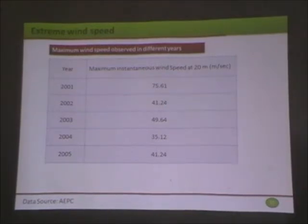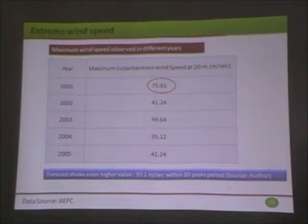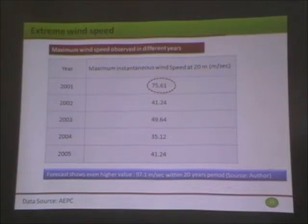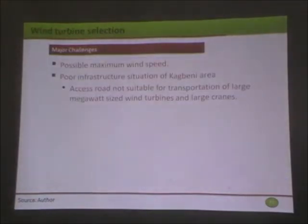Looking at extreme wind speeds, in 2001 a wind speed of 75.61 meters per second was observed. I was wondering if this was an error, but I checked and at 20 meters and 10 meters the values were similar. A forecast shows even higher values — 91.7 meters per second within a 20-year return period. That is equivalent to a category four or five hurricane. This makes it really challenging to select a wind turbine that can withstand such high wind speeds.